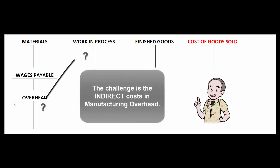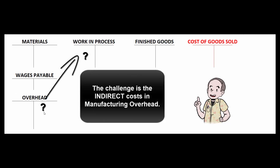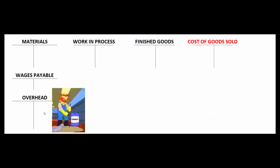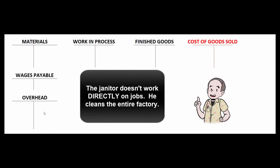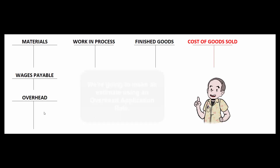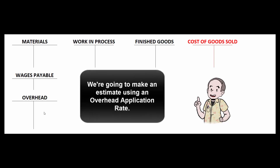The problem is manufacturing overhead — indirect costs. Think of janitorial service: the janitor doesn't work on a particular job, he just sweeps up the entire factory. So how much of his wages or health benefits gets applied to each job? There's no way to tell, so we're going to make up an overhead application rate to make a good estimate.